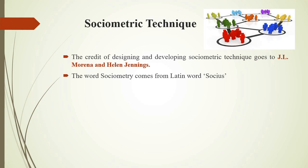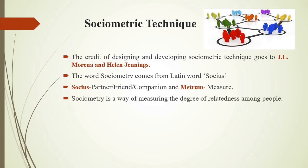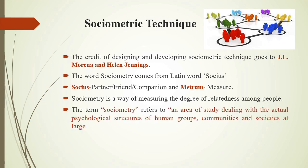The word Sociometric comes from the Latin word Socius. Socius means partner, friend, companion, and metrum means measure. Sociometry is a way of measuring the degree of relatedness among people. Sociometry refers to an area of study dealing with the actual psychological structures of human groups, communities, and societies at large.